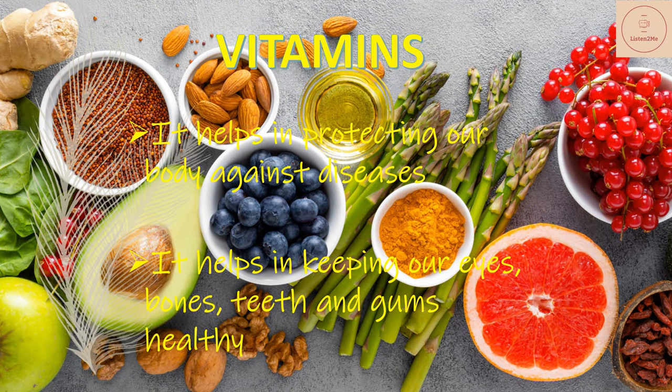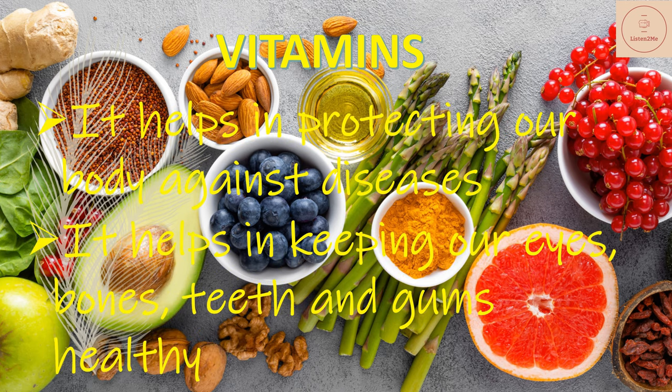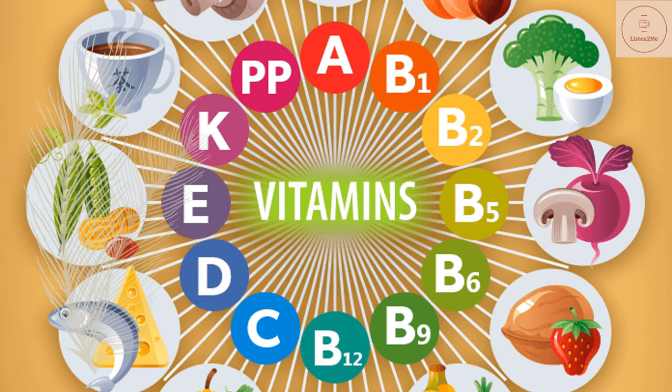Next is vitamins. These help in protecting our body against diseases. Vitamins also help in keeping our eyes, bones, teeth, and gums healthy. There are different kinds of vitamins — vitamin A, C, D, E, and K. There is also a group of vitamins called vitamin B complex. Our body needs all these types of vitamins in small quantities.